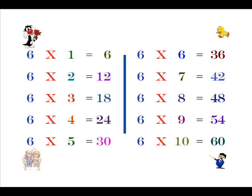Six sixes are thirty-six. Six sevens are forty-two. Six eights are forty-eight. Six nines are fifty-four. Six tens are sixty.